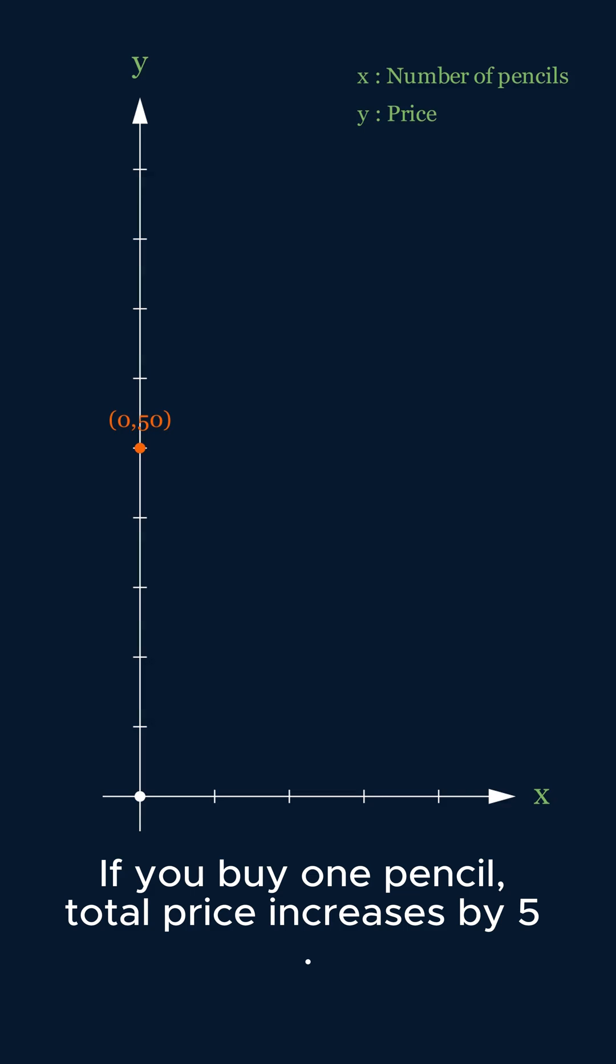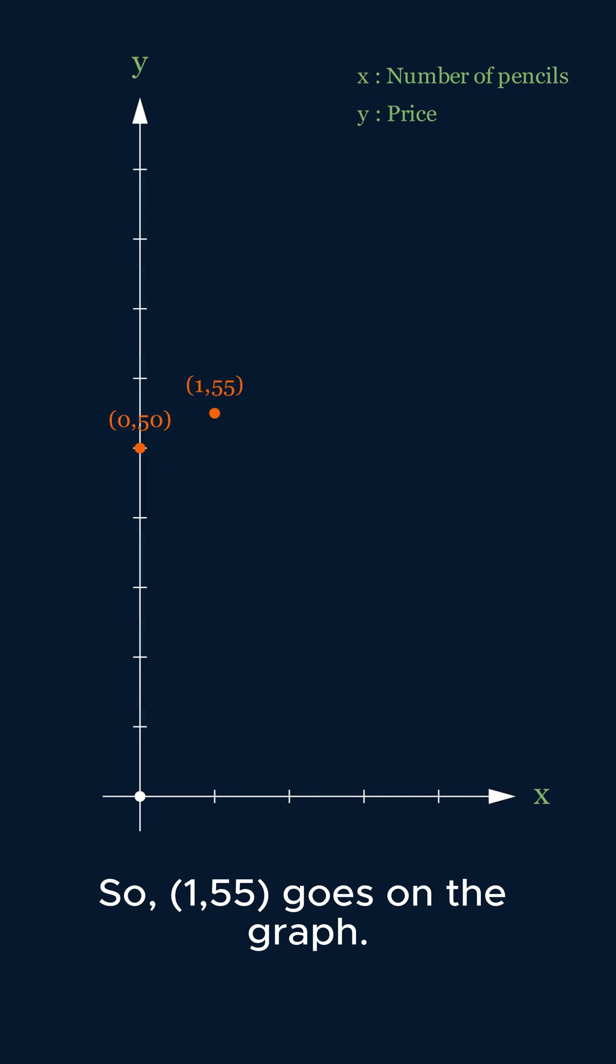If you buy one pencil, the total price increases by 5, so (1, 55) goes on the graph.